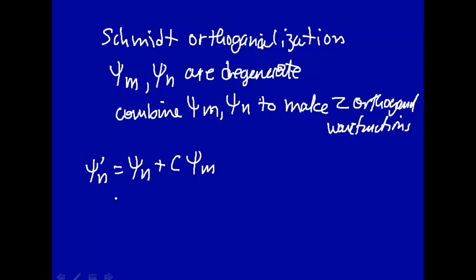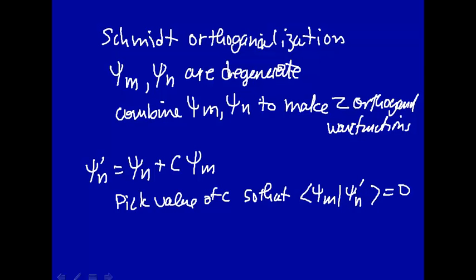And what you want to do is to pick the value of C so that the product of psi M times this psi N, this new value of psi N, is equal to zero. This will make the new wave function here, which is a combination of the old wave functions, make those orthogonal. So how do you pick a value? Well, just let's see here. Let's form the product psi M psi N star prime. Well, that's psi M psi N prime is the old psi N plus C times the old M.